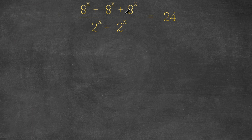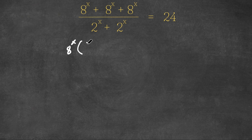Now what I'm first going to do is factor out 8 to the power of x from the numerator. So now we have 8 to the power of x times — 8 to the power of x divided by 8 to the power of x is 1, plus the same thing, 1, plus again, 1.